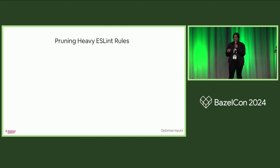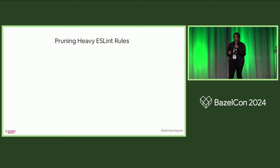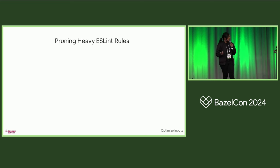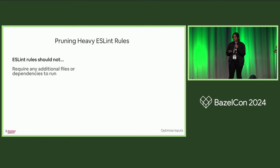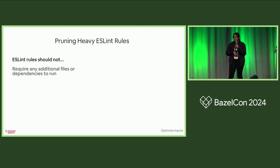ESLint is highly configurable. It has a plugin architecture system that allows you to do a lot of different things — it can operate on a single file, on multiple files in the repo, or on dependencies. So we decided that an ESLint rule in our repository is not allowed to require any additional files or dependencies to run. When we did this audit, we found that there weren't many of these — very few. A lot of them we had contributed, and many of them were made redundant when you're using TypeScript.